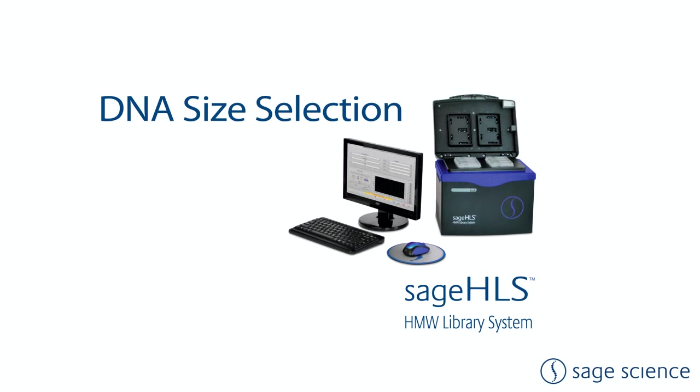Welcome to the video tutorial for DNA size selection using the Sage HLS platform. The goal of this process is to collect six size bins that include one or more fractions that have narrow fragment size distributions around 15 to 20 KB in length. These are well suited for PacBio's Hi-Fi circular consensus sequencing.